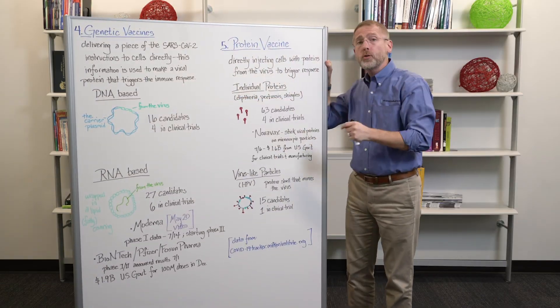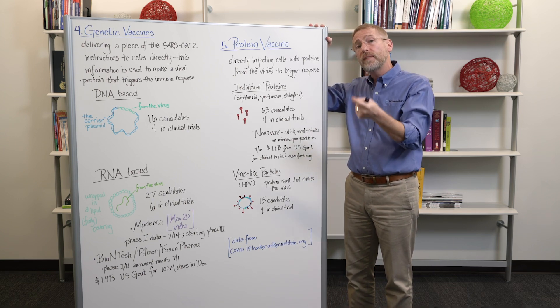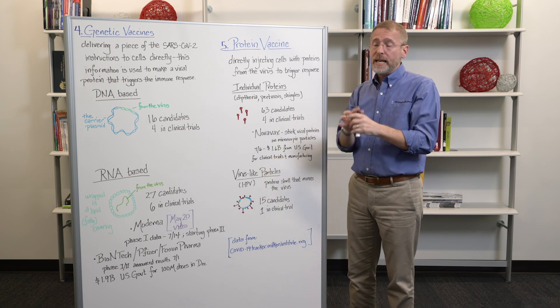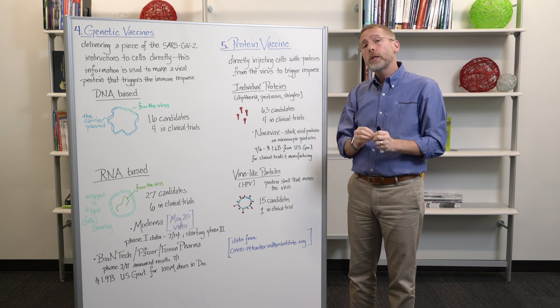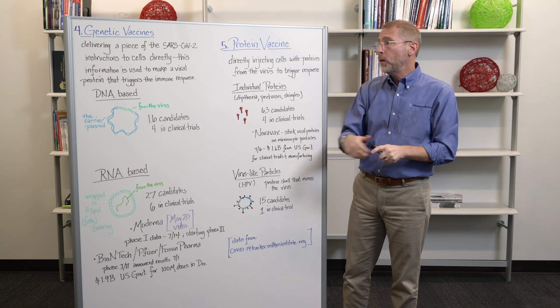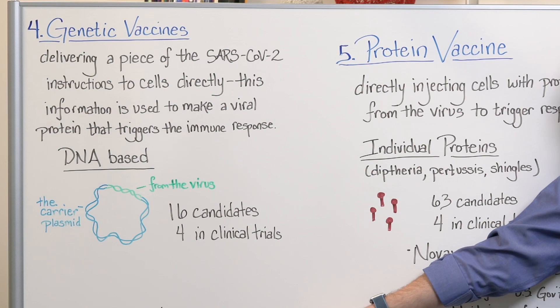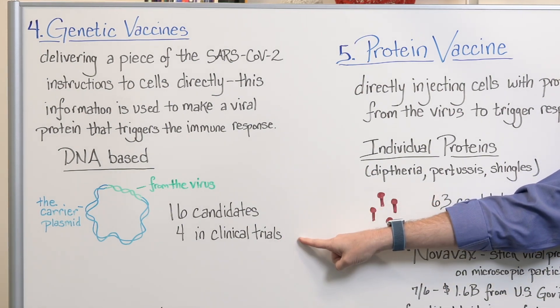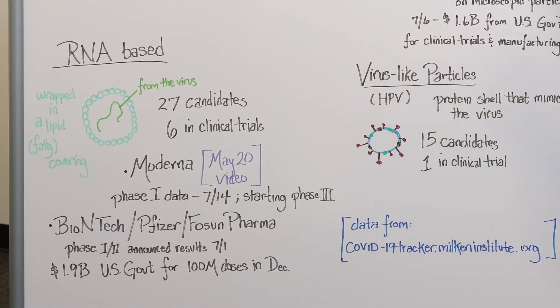The fourth candidate also is trying to get genetic information into the cell, but instead of using a virus, they're just directly injecting the genetic information, either in the form of a circular piece of DNA called a plasmid or they're using a piece of RNA and they're covering it with fat to get it into the cell. So that's the difference between the DNA based and the RNA based genetic vaccines. 16 candidates in the DNA based, four already in clinical trials,